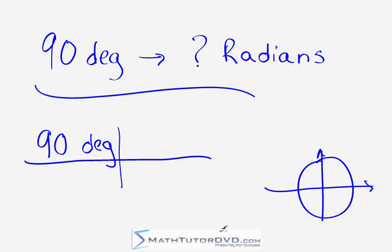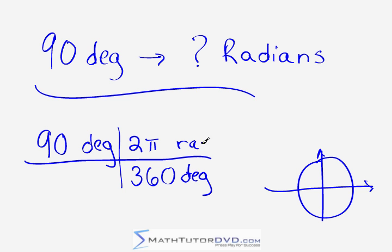The way you set up this cancellation table is: since we know 360 degrees equals two pi radians, we'll put 360 DEG on the bottom and two pi RAD on the top. The reason we write it with degrees on the bottom and radians on the top is that when you have the same unit on the bottom and top, you can cancel the degrees with the degrees. If you had put 360 degrees on top and two pi radians on the bottom, none of the units would cancel — they can only cancel if the same unit appears on both top and bottom.